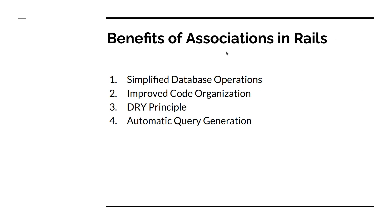Now let's discuss some benefits of using associations in a Rails application. The first is simplified database operations. Associations abstract away the complexity of writing raw SQL queries and handling low-level database operations. Instead, you can use intuitive methods and macros to query and manipulate associated data. We will see how to perform these kinds of database operations in upcoming lectures.